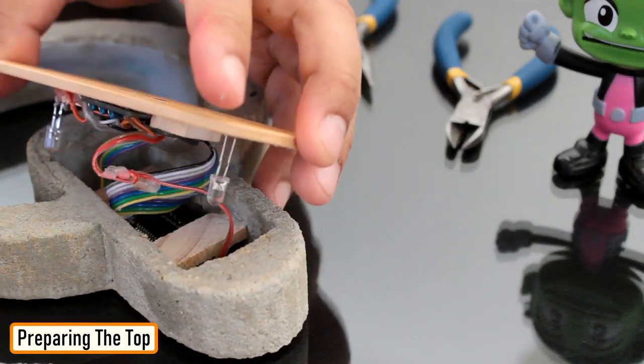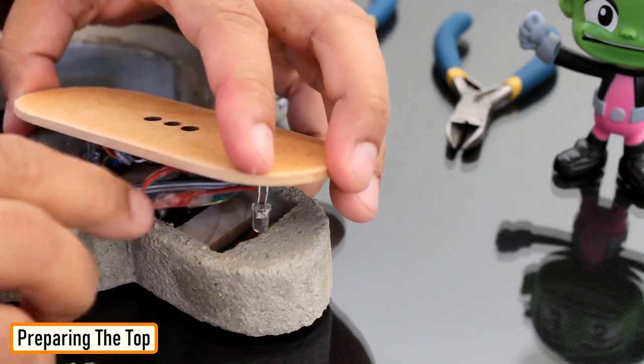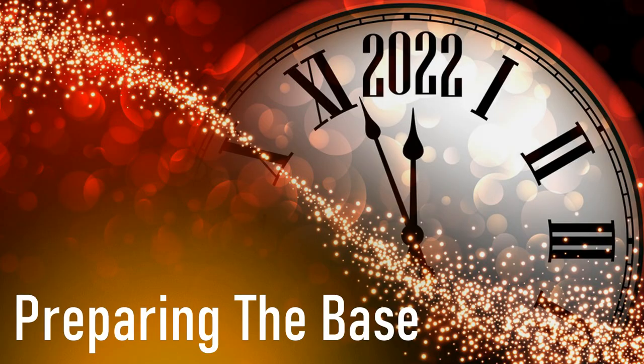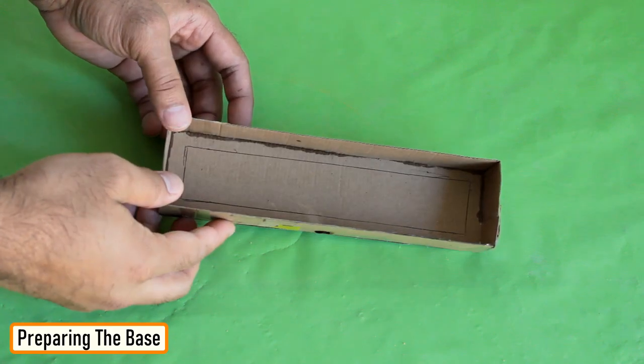Frankly speaking, it was an absolute challenge for me to hot glue the back plate on the camera. After struggling for a bit, I did that properly behind the scene. Now that we are done with the top section, let's start working on the base of the clock.